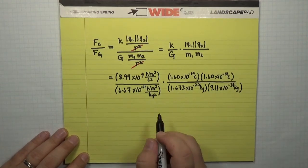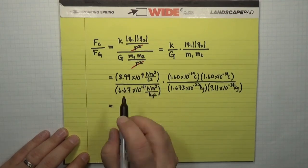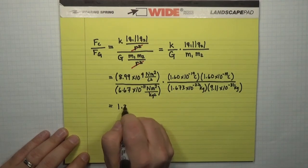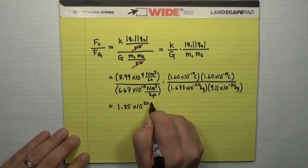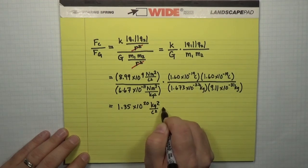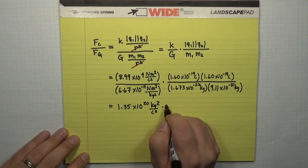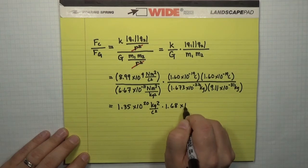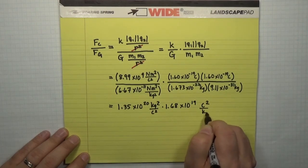So, you can multiply those out. If you put them into your calculator, the constants here become 1.35 times 10 to the 20 kilograms squared per coulomb squared. And then these ratios here become 1.68 times 10 to the 19 Coulombs squared per kilogram squared.